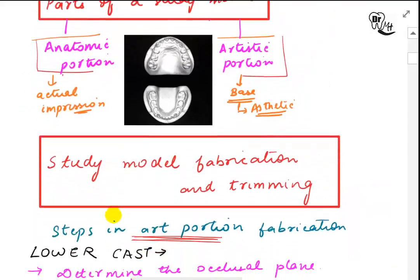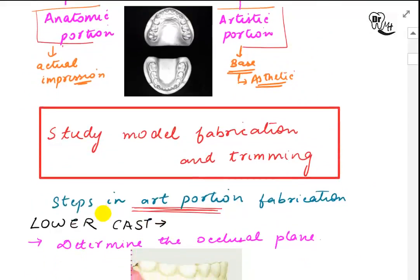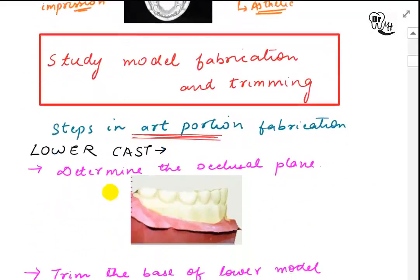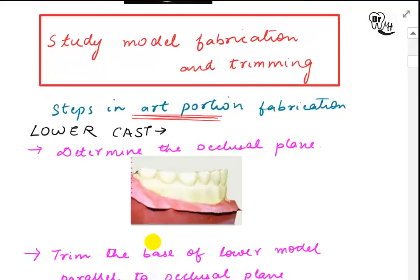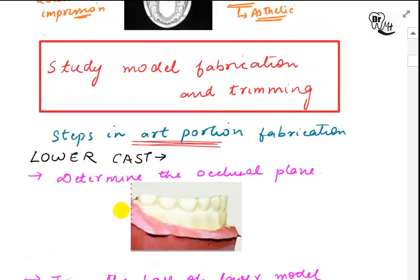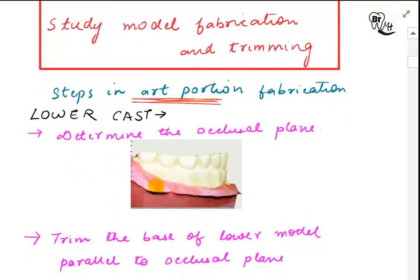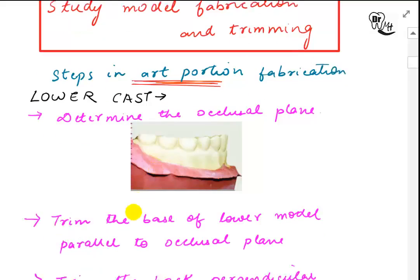Study model fabrication and trimming will be covered in this video, and in the next video we will move on to model analysis. The steps in art portion fabrication begin with making the base — the back portion of the study model — and then progressing to various angulations and how to trim the cast.